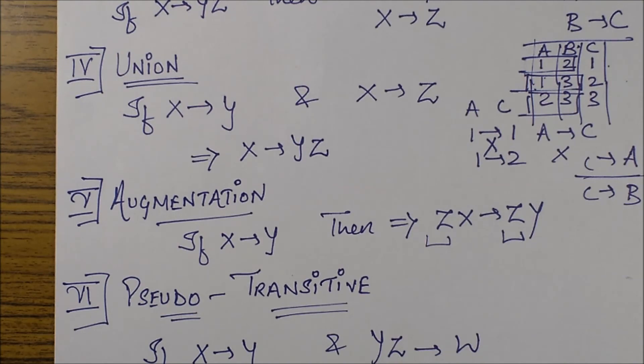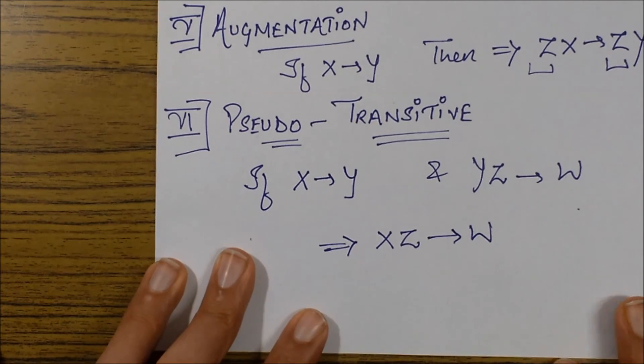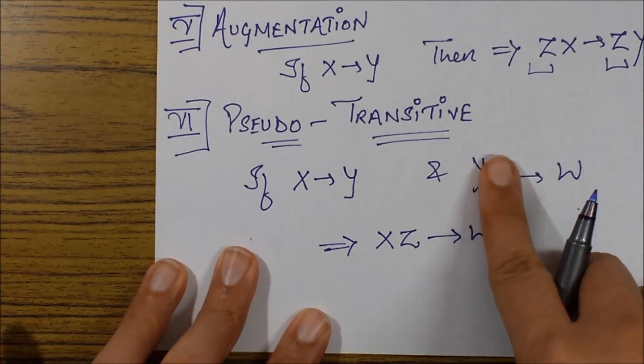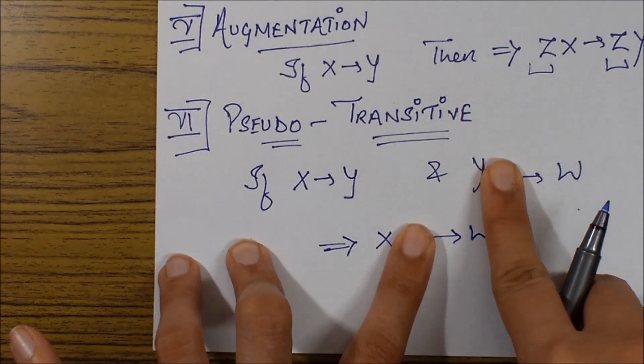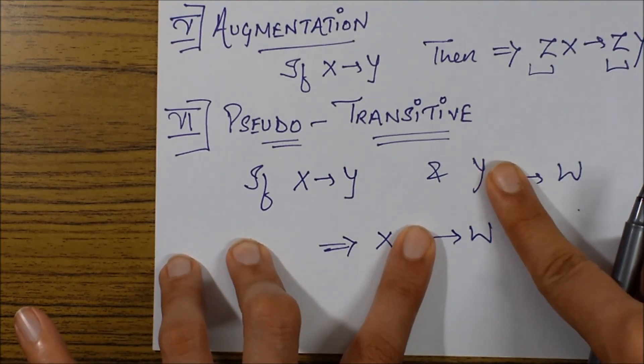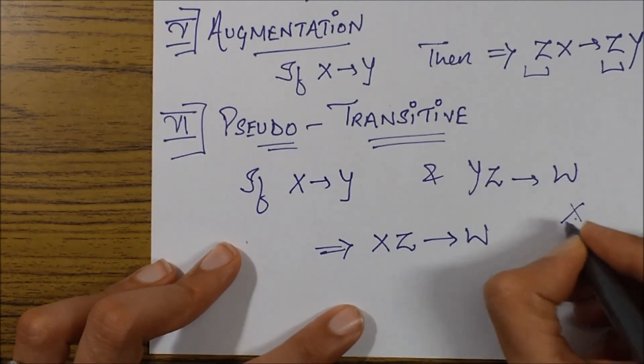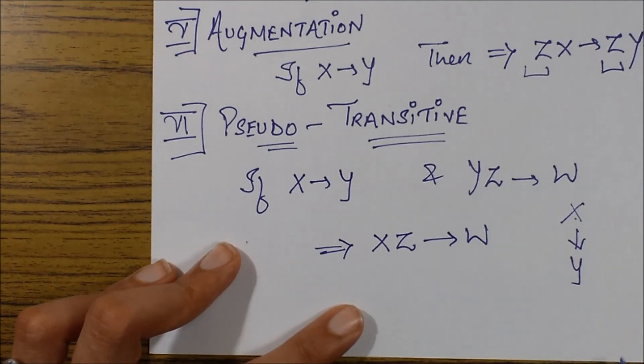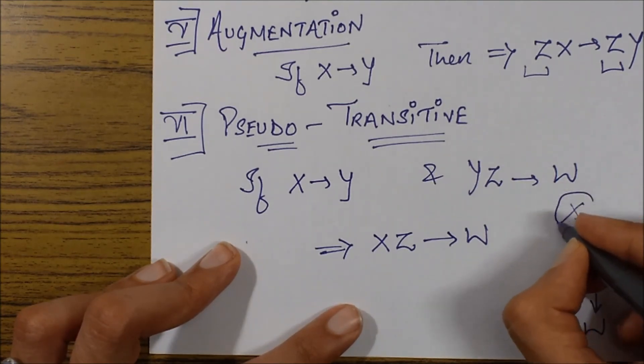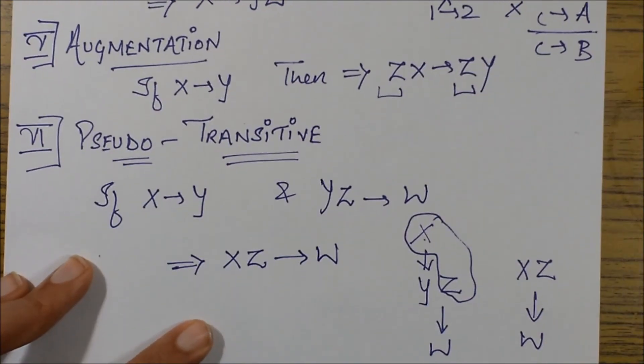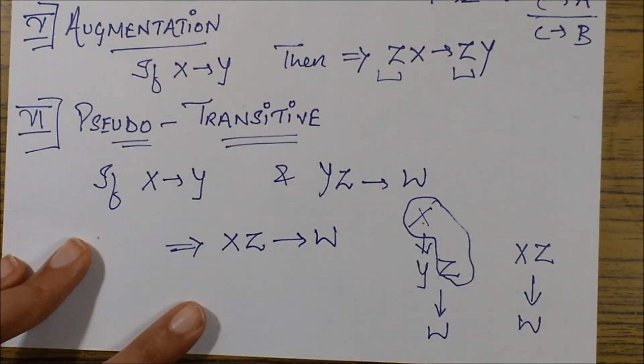Let's move to the next one which is pseudo transitivity. Pseudo transitivity states that if X goes to Y and YZ goes to W, if both these are given as true, then we can say that XZ goes to W. It would have been transitivity if I would have said X goes to W, but now I have appended an attribute and it has become pseudo transitive. If I just visualize it, it would be X goes to Y, then I append something extra, YZ which goes to W. Then I take this part and say XZ goes to W. This might give you a better clearer picture.